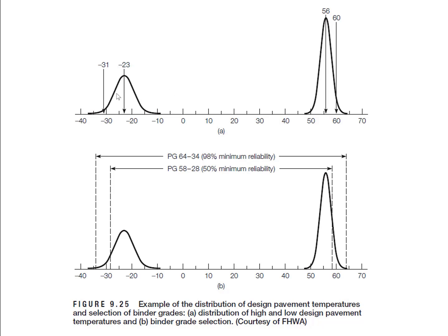For a normal distribution, the area under the curve represents the probability. So if we have a binder whose design maximum is 56 degrees Celsius and design minimum is negative 23 degrees Celsius, the reliability level for this binder will be 50 percent. This is because there is a 50 percent chance the maximum temperature exceeds 56 degrees Celsius, and a 50 percent chance the minimum temperature falls below negative 23 degrees Celsius.